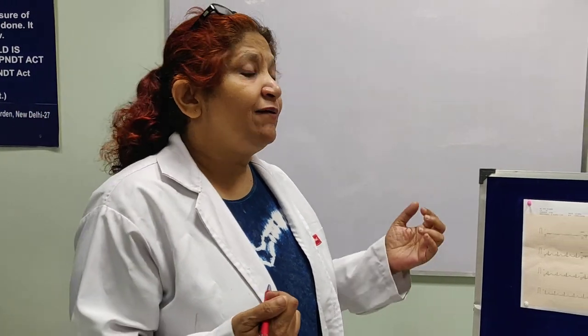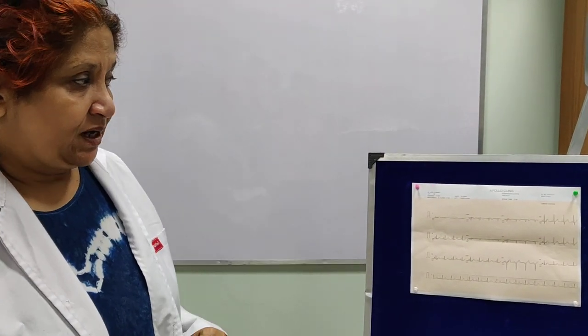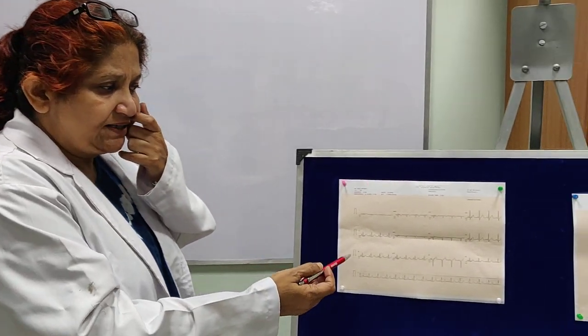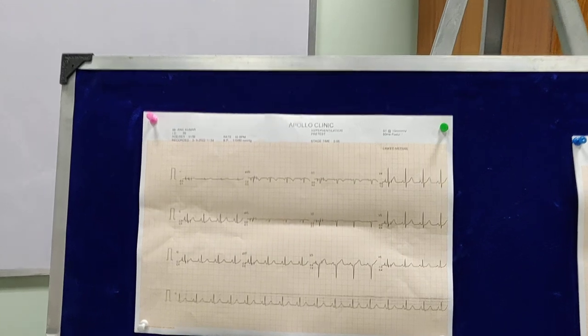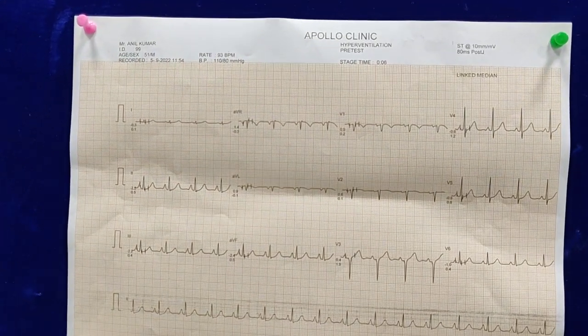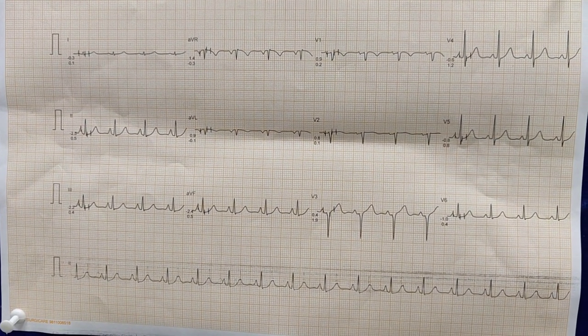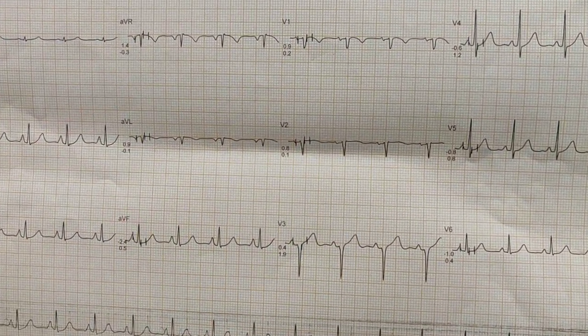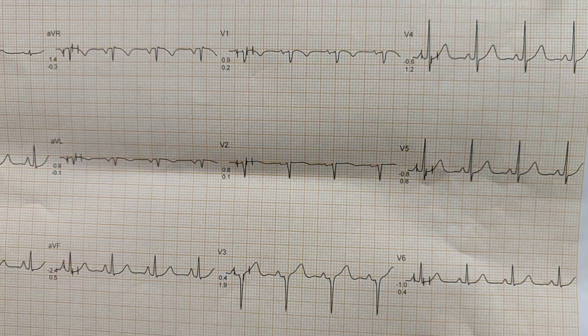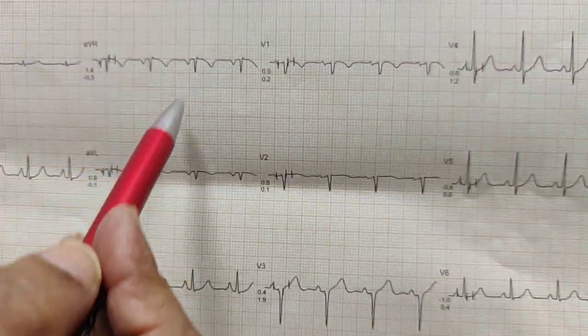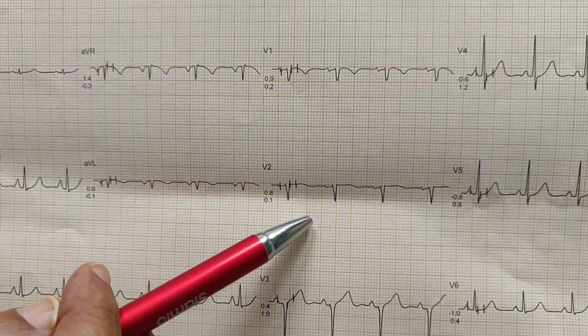The apparent problem looks bigger, but the actual problem is nothing — it's just a misplaced lead, but it can create such havoc in the minds of people. This is one case who had come for a treadmill test examination. This patient had a little chronic bronchitis; the patient was lean and thin with a very slender chest. You can see in the chest leads V1, V2, V3, then V4, V5, and V6 — the R wave progression is very poor in V1, V2, and V3.